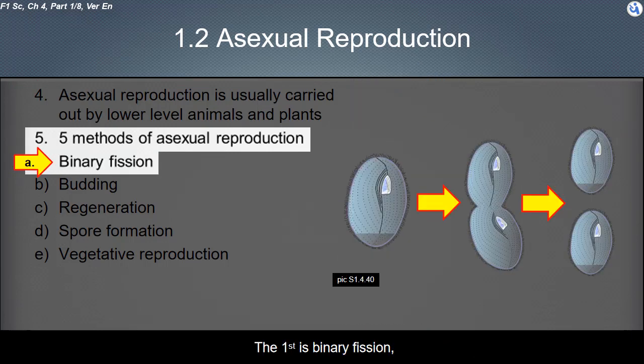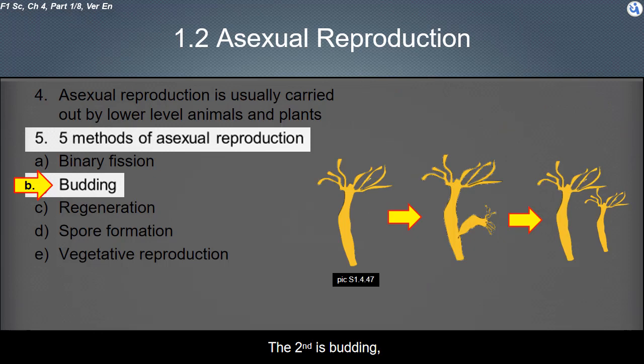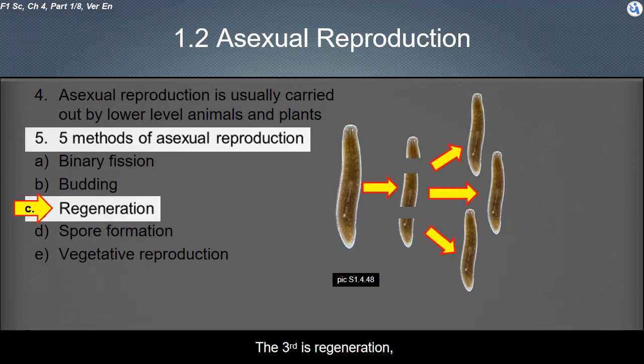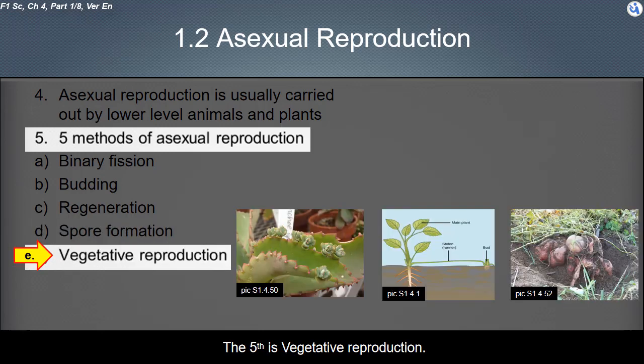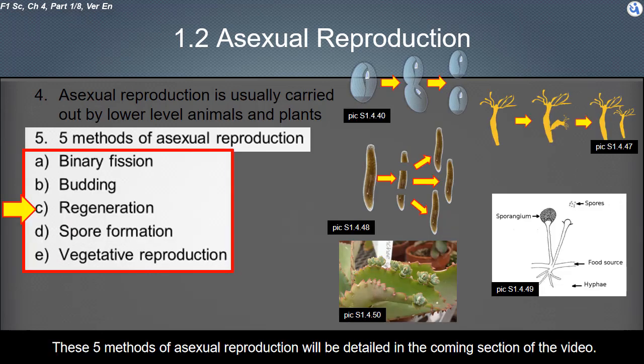The five methods of asexual reproduction are: first, binary fission; second, budding; third, regeneration; fourth, spore formation; and fifth, vegetative reproduction. These five methods will be detailed in the coming sections of the video.